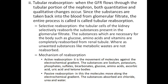Second is tubular reabsorption. When the GFR flows through the tubular portion of the nephron, both quantitative and qualitative changes occur. Since substances are taken back into the blood from the glomerular filtrate, the entire process is called tubular reabsorption. The tubular cells selectively reabsorb substances present in the glomerular filtrate. Substances necessary for the body such as glucose, amino acids, and vitamins are completely reabsorbed from the renal tubules, whereas unwanted substances like metabolic waste are not reabsorbed.